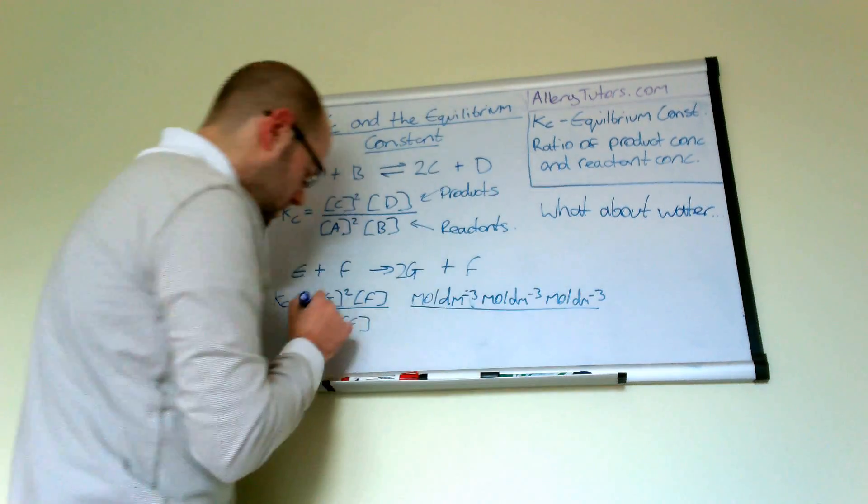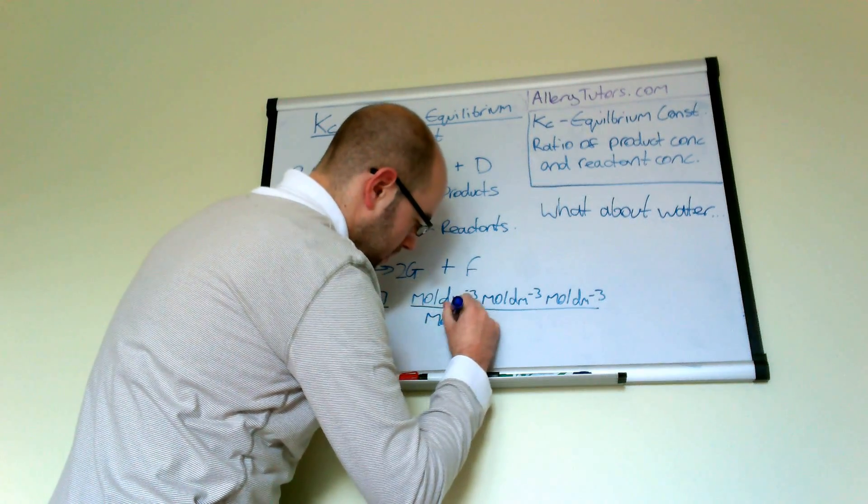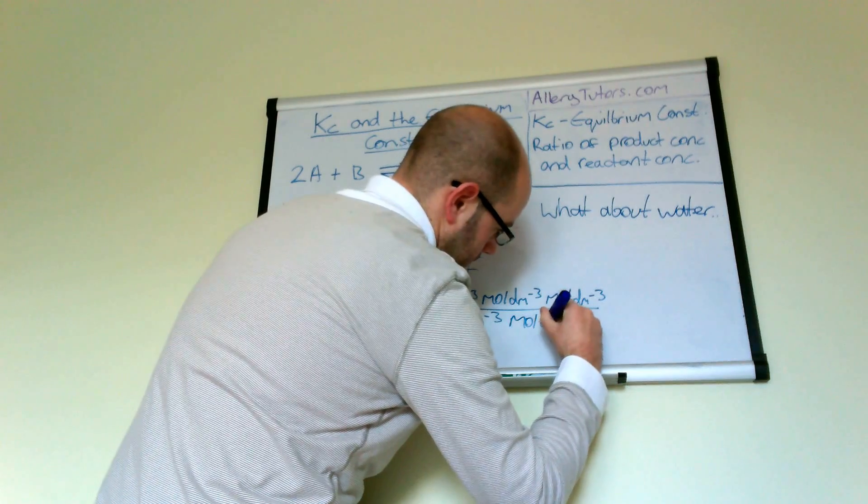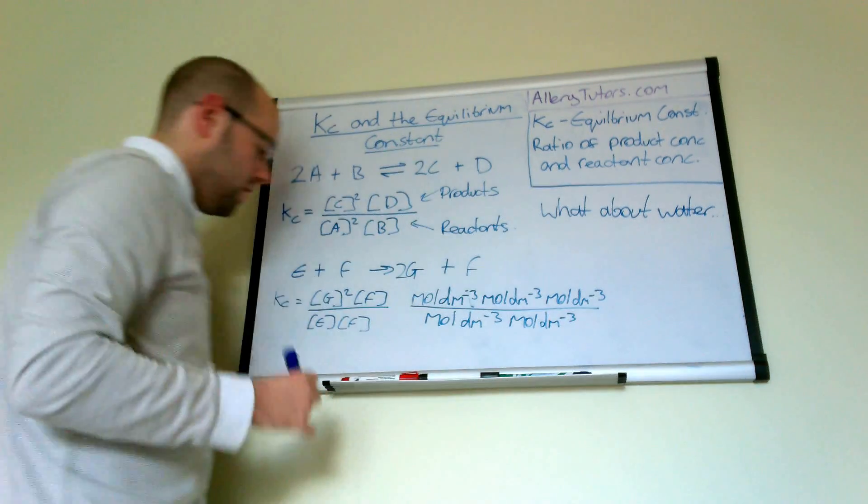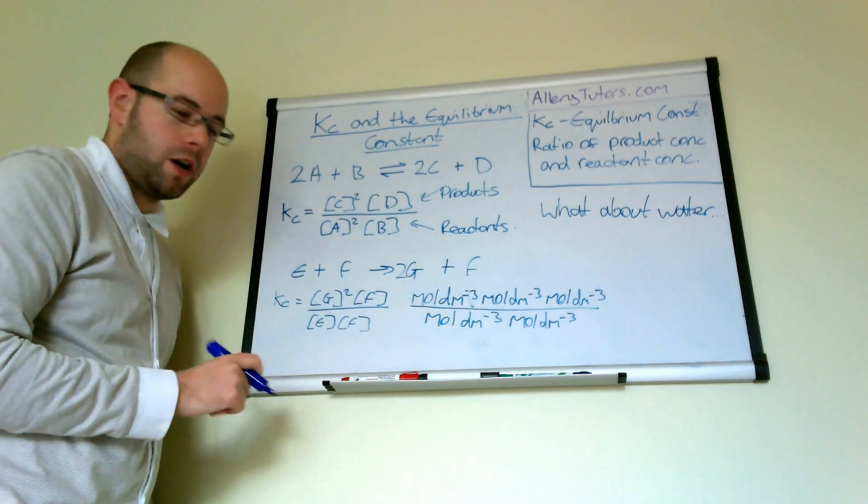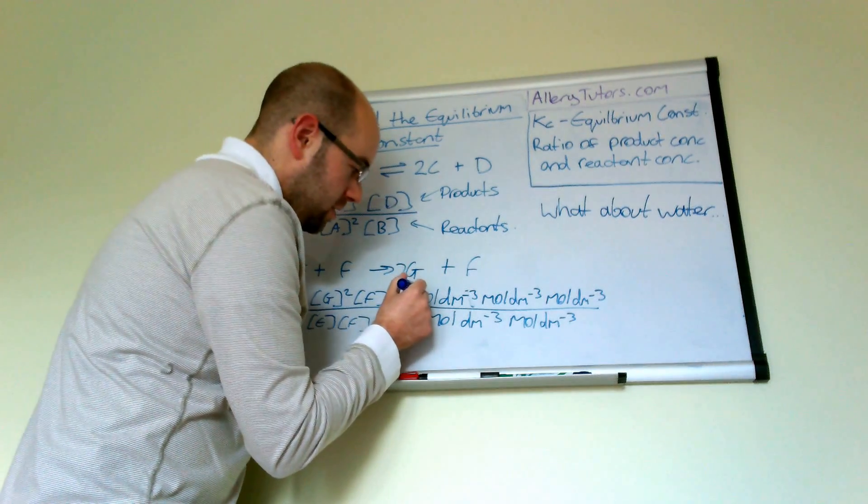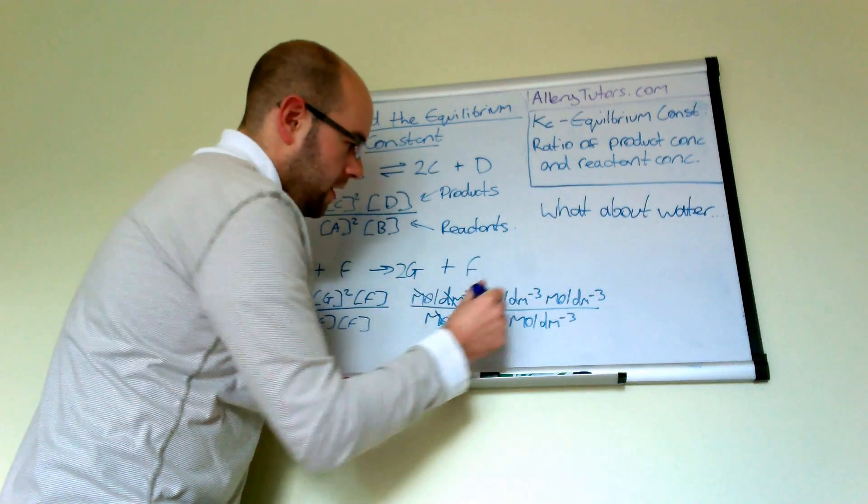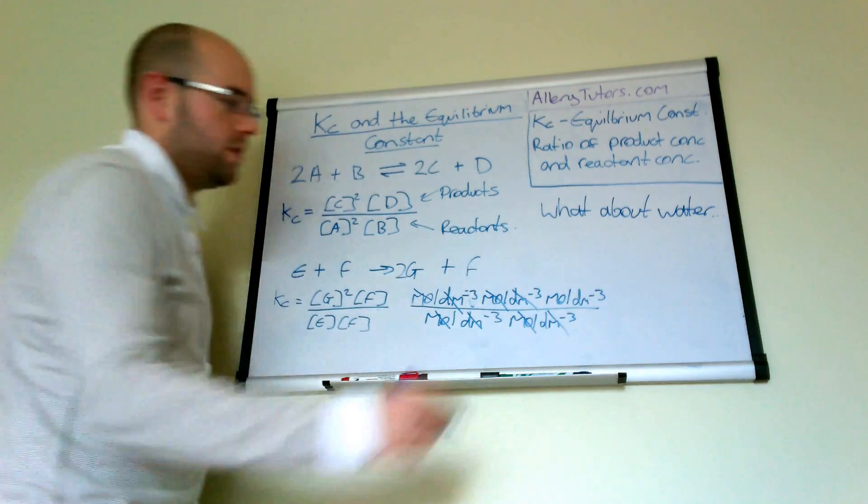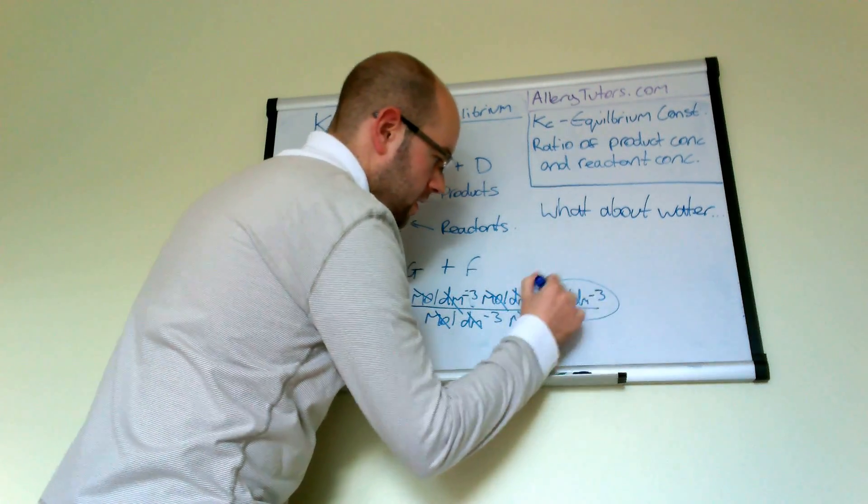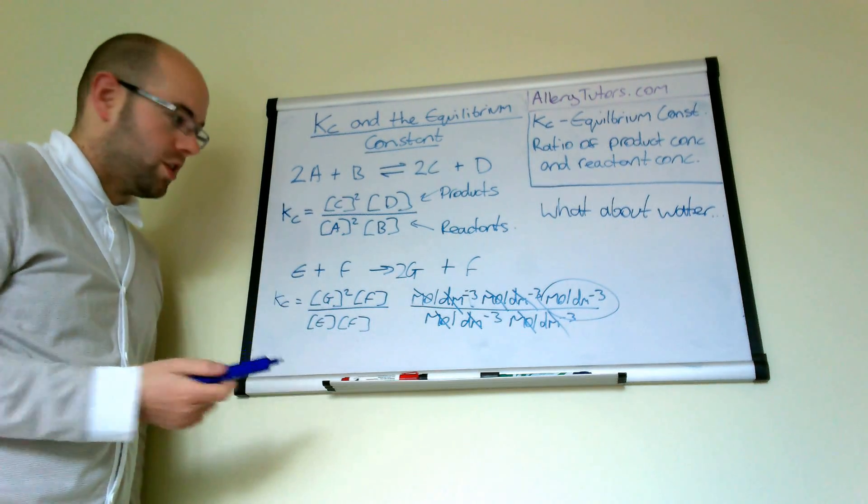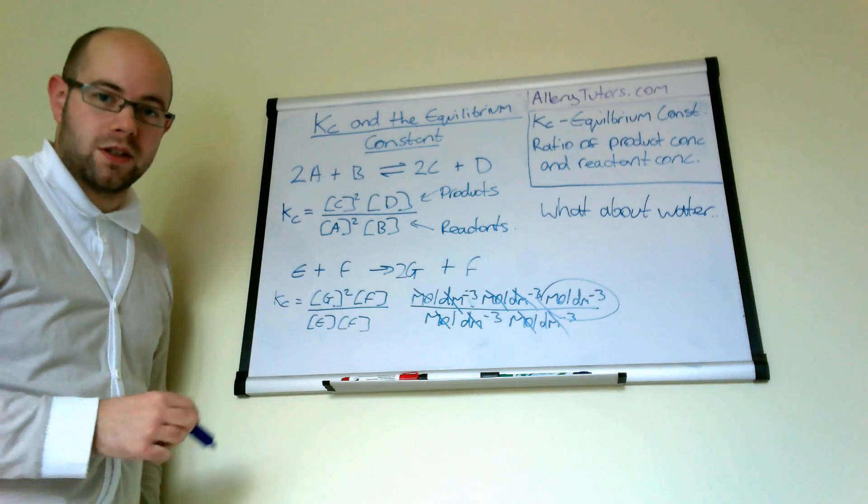So we have three lots, two there and one there as well. And we're going to divide that by two lots of moles per dm cubed on the bottom. So you can see we've got two lots of moles per dm cubed there and three lots in total on the top. And all you do is you cancel them out. So we do one, that's one there and then two. And then what you're left with is just this bit which is moles per dm cubed. So in this reaction here the units of KC are moles per dm cubed.